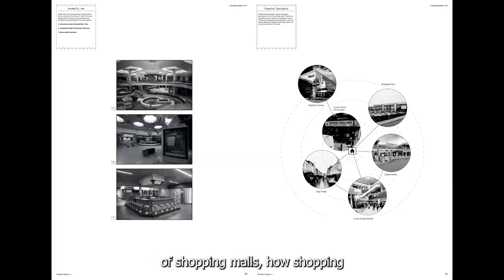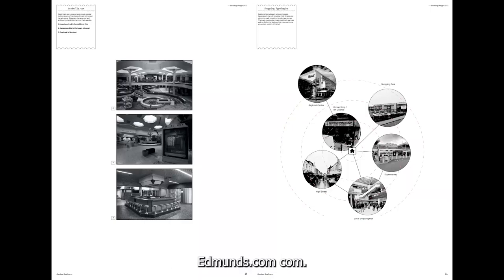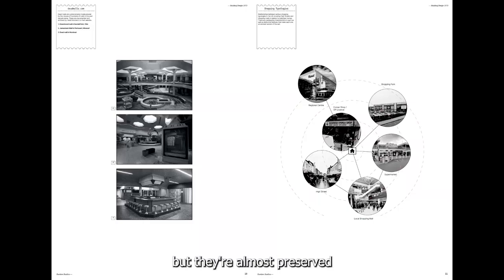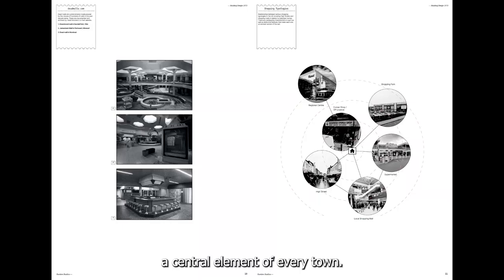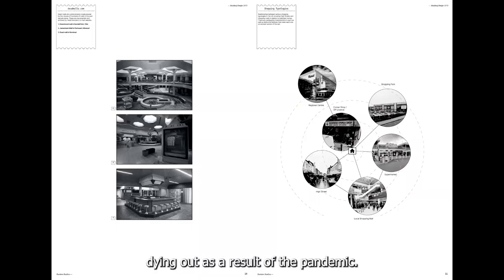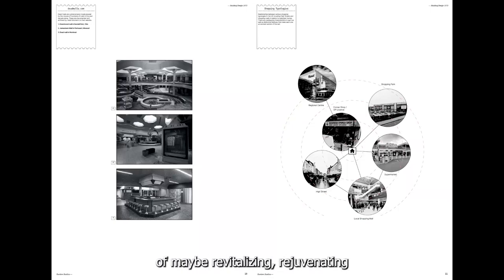I then tried looking at the history of shopping malls and how they're currently perceived in today's society. I found this really fun website — deadmalls.com — which shows different malls in America that have been abandoned and are derelict and not being used, but almost preserved in a really interesting way. I was also looking at different types of shopping typologies in the UK. The British high street is really important — it's a central element of every town. Recently there's been a lot of talk about the high street dying out as a result of the pandemic, but this was happening even before then. I quite liked this idea of revitalizing and rejuvenating the concept of the high street in a futuristic way.